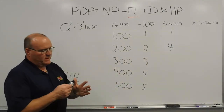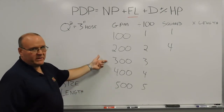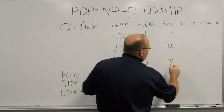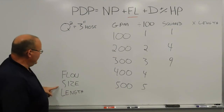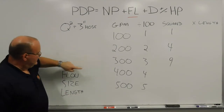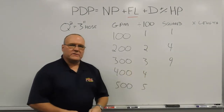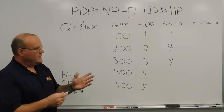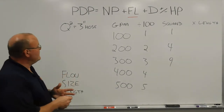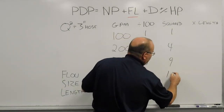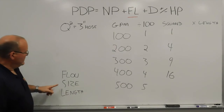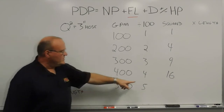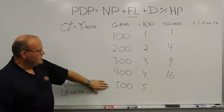For 300 gallons a minute: knock off the zeros, divide by 100 gives 3. Then 3 times 3 gives 9. So for every 100 feet of 3-inch hose flowing 300 gallons a minute, there will be approximately 9 pounds of friction loss. For 400 gallons a minute: knock off the zeros, 4 times 4 to square it gives 16. So for every 100 feet of 3-inch hose flowing 400 gallons a minute, there will be 16 pounds of friction loss.